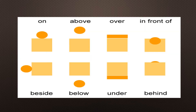Here is a diagram to make the sense of different prepositions even clearer: on, above, over, in front of, beside, below, under, behind. I hope the small diagram makes it clear to you the different positions or the different prepositions.